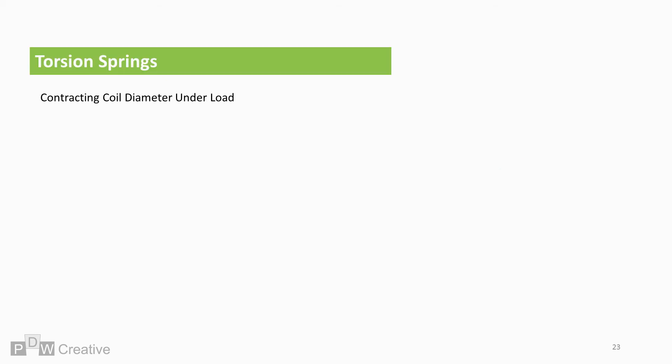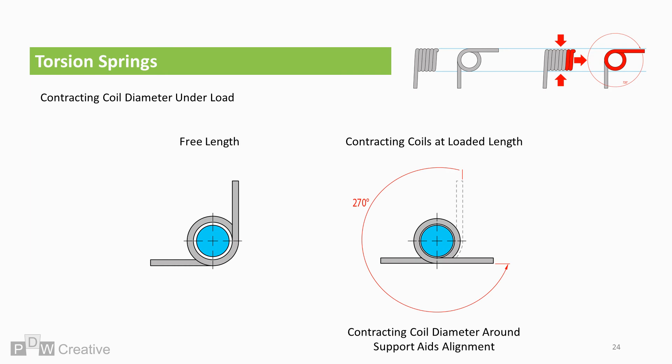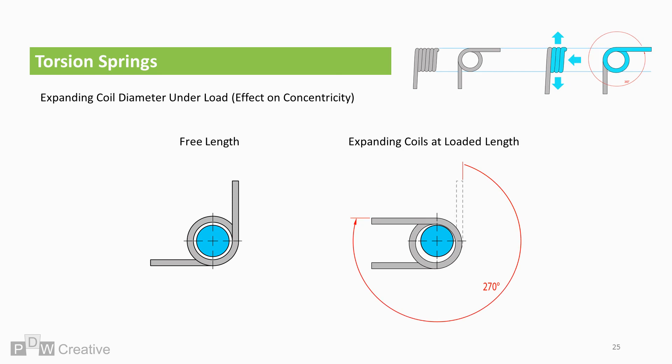The changing coil diameter needs to be considered when designing rod or tube assembly support. The coil contraction under load means that any rod clearance must be based on the maximum loading position to maintain clearance. The rod support aids alignment. Whereas, if the spring was rotated in the opposite direction, the expanding coils would bring the spring off centre. This would also contribute to less efficient torque output.